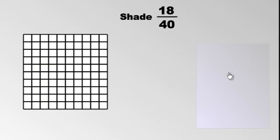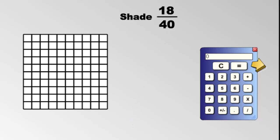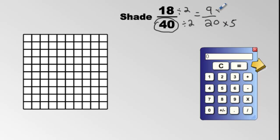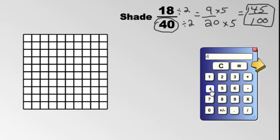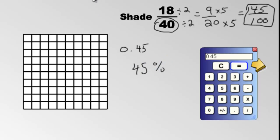How about 18 out of 40? Here's a trick when the denominator is 40 — a two-step trick you can do in your head. Divide by 2 and divide by 2 again, and you get 9 out of 20. Then take that 20 and multiply it by 5, and you get 45 out of 100. That's 0.45, which is 45%. We could have pushed 18 divided by 40 on a calculator and got 0.45, but why waste time when you can see it right here?